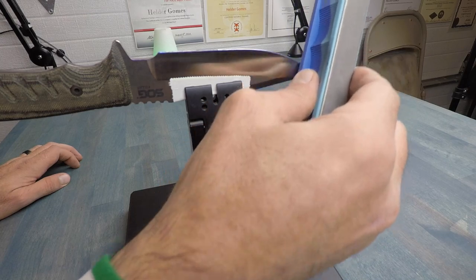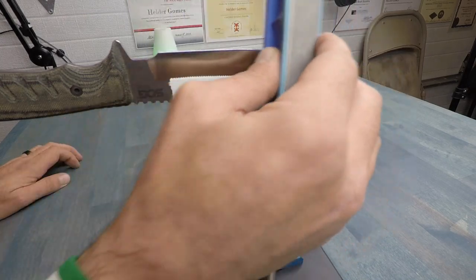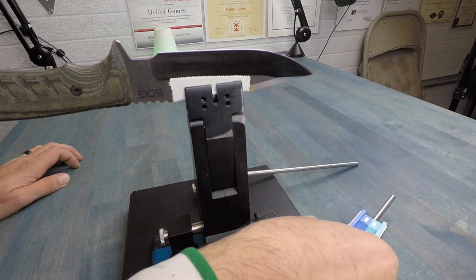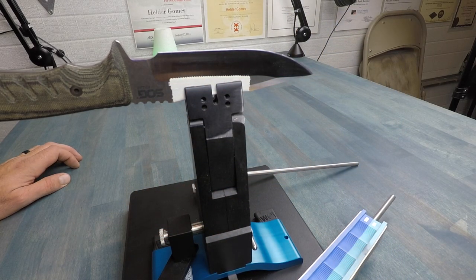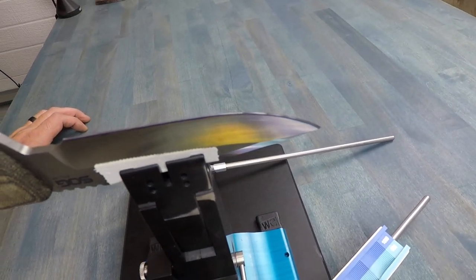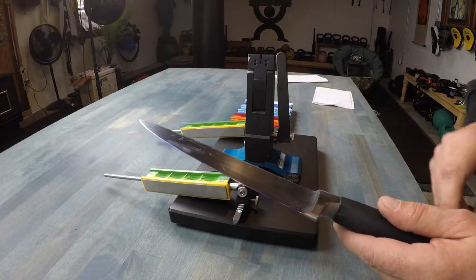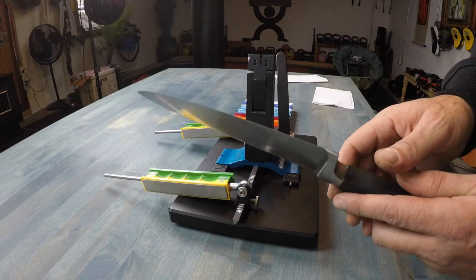And then what we basically want to do is grab your highest grit, let's say I have a thousand grit sanding block here. Utilize that and make sure that you're able to take that marker line off and with a little adjustment up and down or going up a degree down a degree you'll basically be able to take that line off and know exactly the right angle that you need for sharpening your blade.